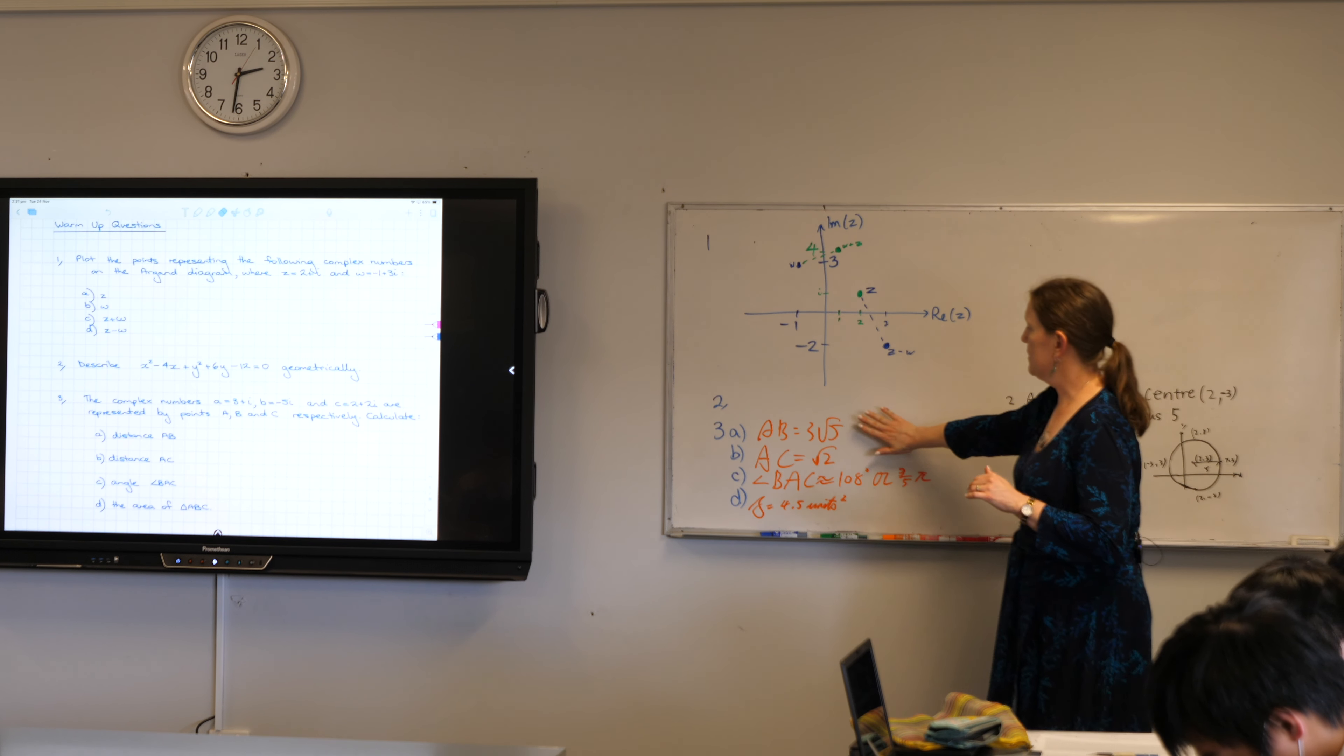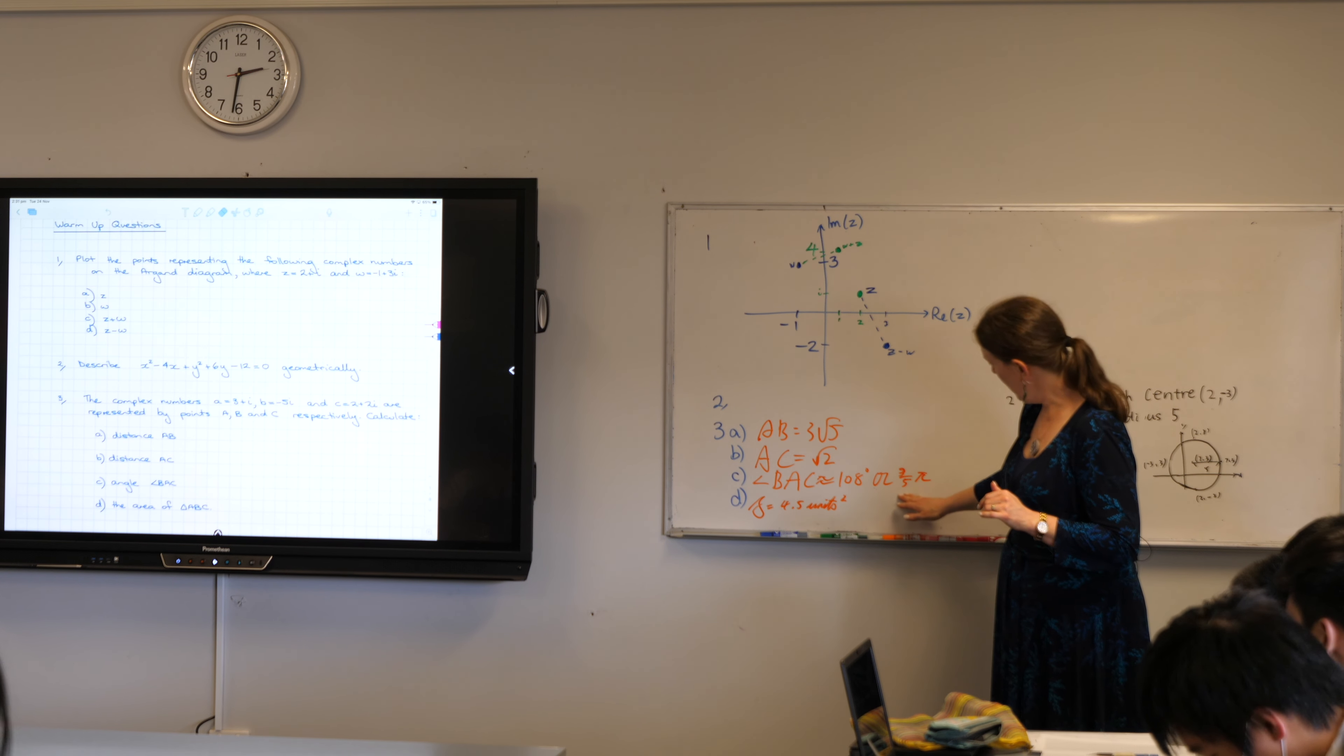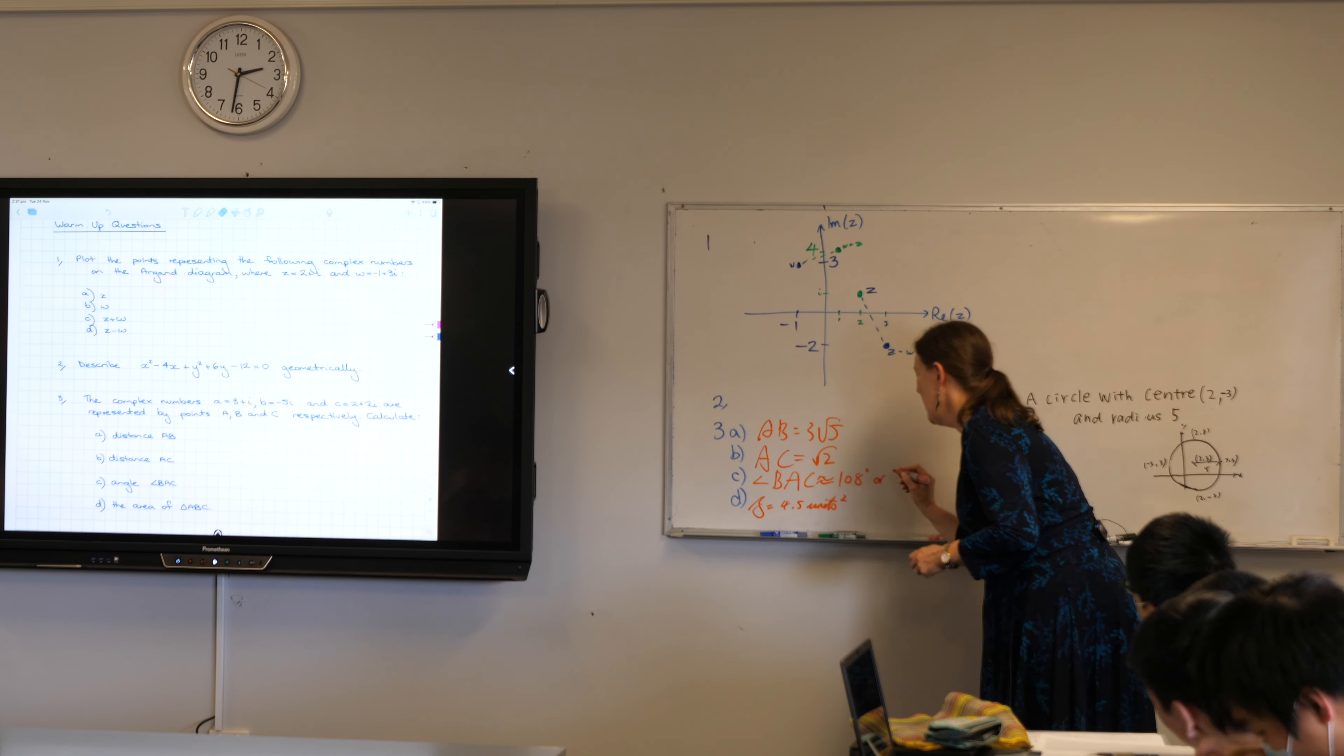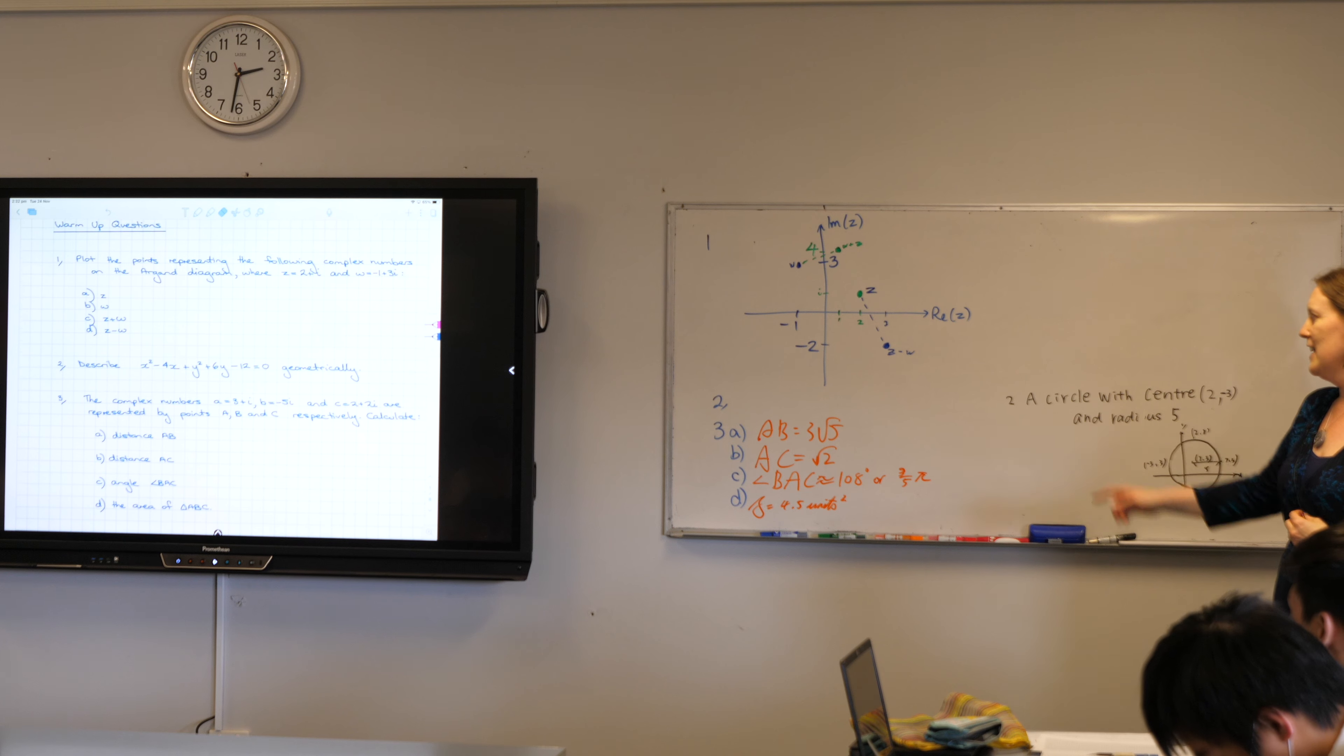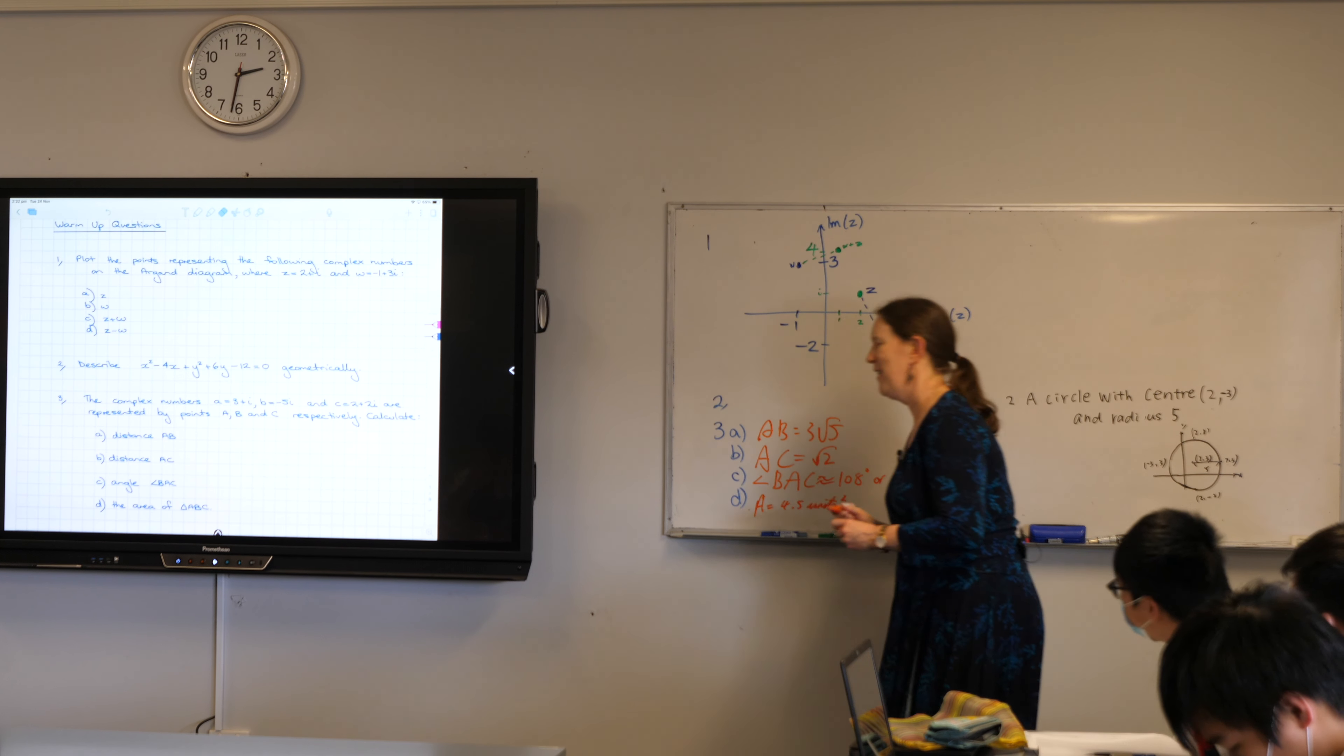Last one. AB is three root five. AC root two. Angle BAC, one hundred degrees, one hundred and eight degrees. Four three. Oh, that's an or. Yeah. Or, I was trying to work out what that was, sorry. Or three-fifths pi, and that gave us an area of 4.5.